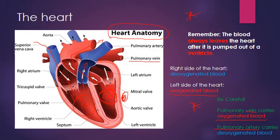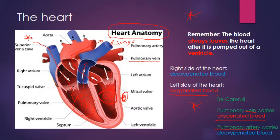Starting at the superior vena cava: deoxygenated blood comes in from the body, down into the right atrium, into the right ventricle, and is pumped out via the pulmonary artery to the lungs. Once oxygenated at the lungs, the blood comes back through the pulmonary vein, down into the left atrium, into the left ventricle, and is then pumped out of the aorta to the rest of the body.